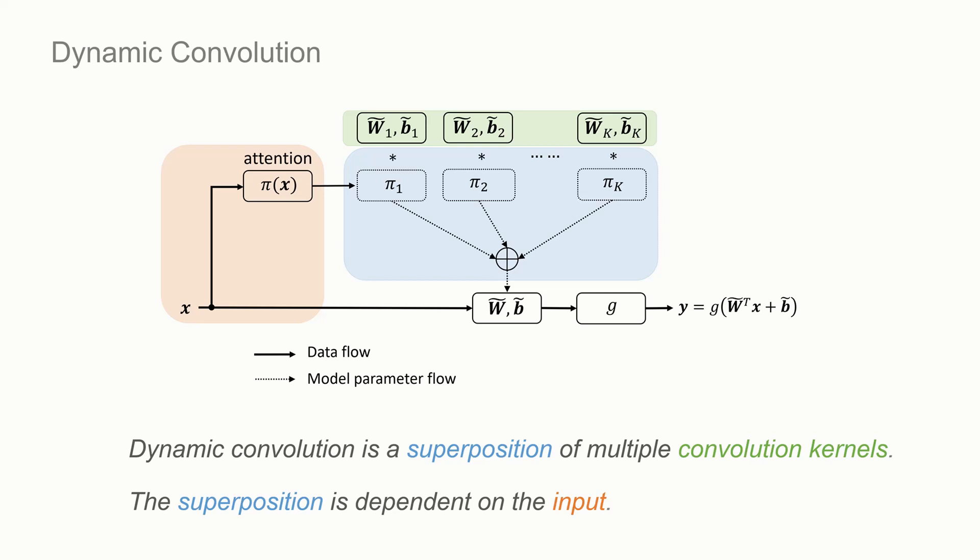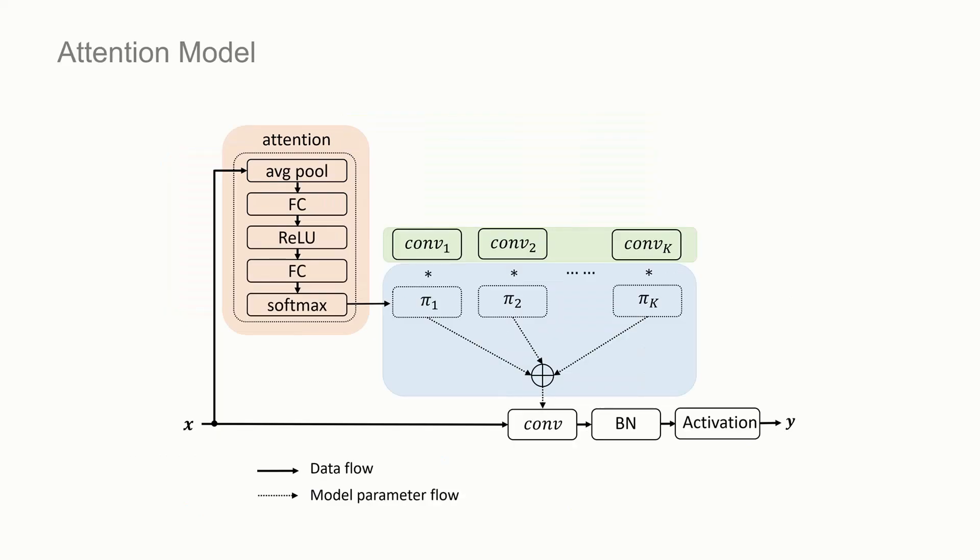Please note that the attention model and the kernel aggregation have very low computational cost. The attention is modeled by simply using average pooling and two fully connected layers. Finally, it is normalized by softmax. All the pieces together form a dynamic convolution layer.